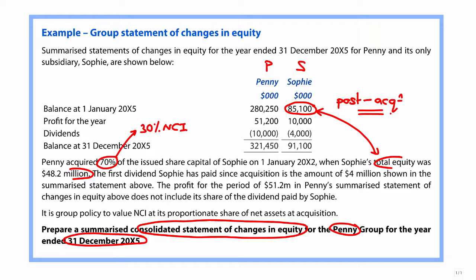The first dividend Sophie has paid since acquisition is the 4 million shown in the summarised statement. So we have two dividends: the dividend paid by Penny will show 100% being paid to the parent shareholders. For Sophie's dividend, what's due between the group and the outside world is just the non-controlling interest share.